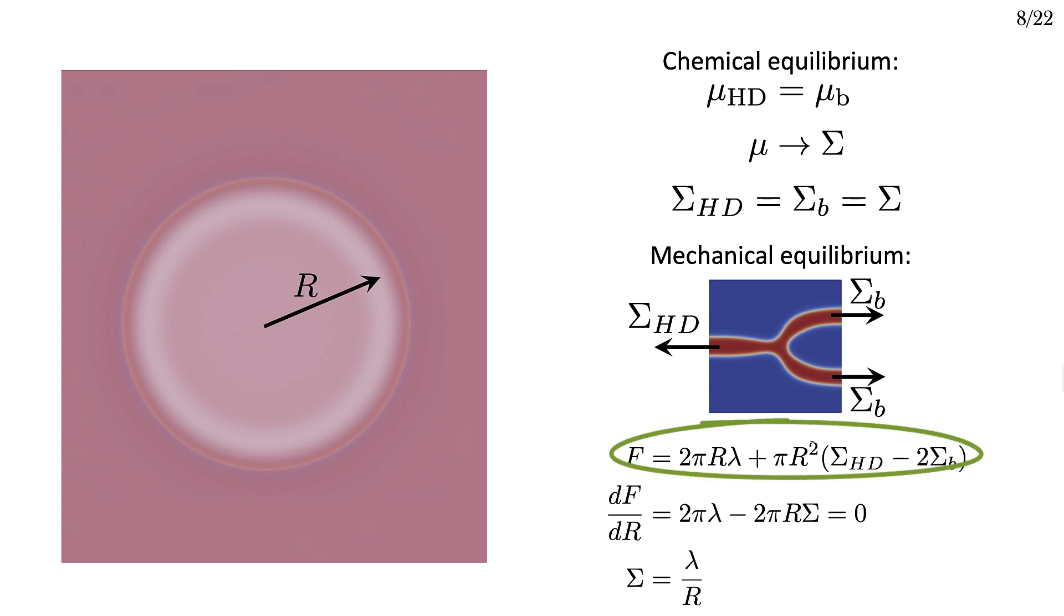To see how this acts, let's look at the free energy in terms of these parameters. Note that the way that I've written this assumes that the tension is constant, which is to say that we're controlling the chemical potential rather than the number of lipids. So this is more like a muVT ensemble calculation than an NVT ensemble calculation.